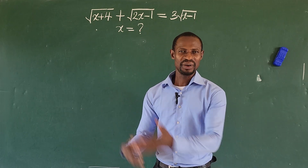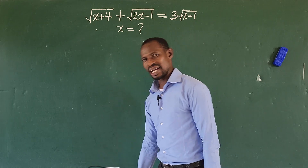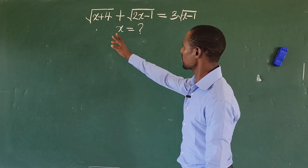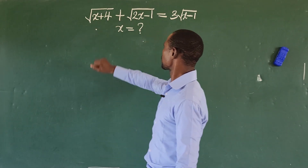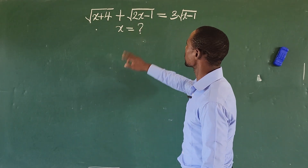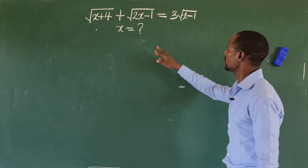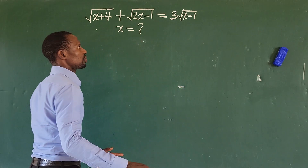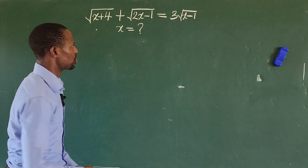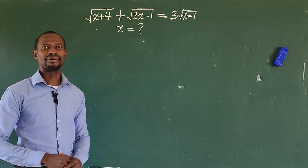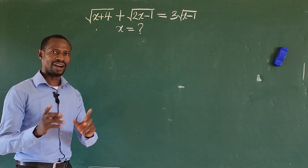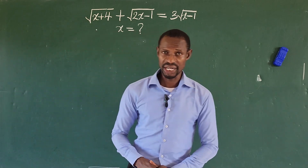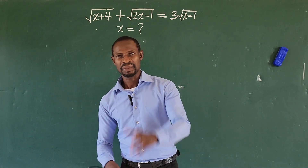We are here again. We have this radical question before us: the square root of x plus 4, plus the square root of 2x minus 1, equals 3 times the square root of x minus 1. What are the values of x that satisfy this equation — this radical challenge?